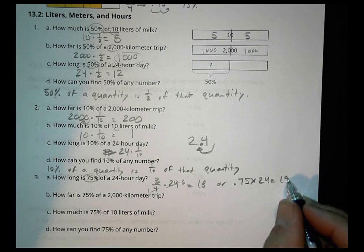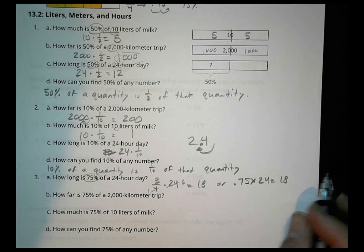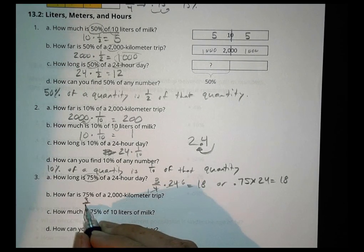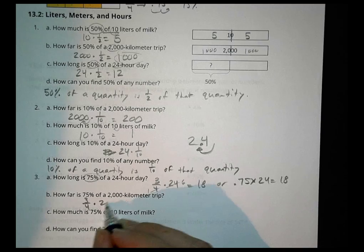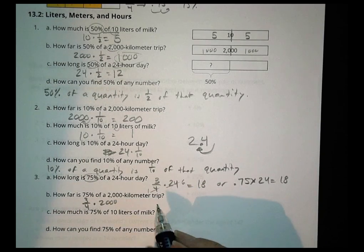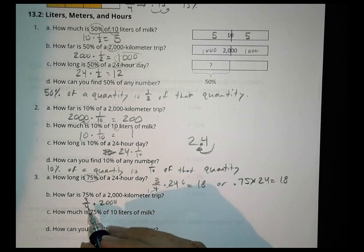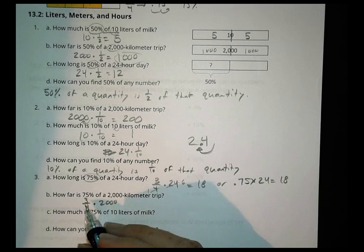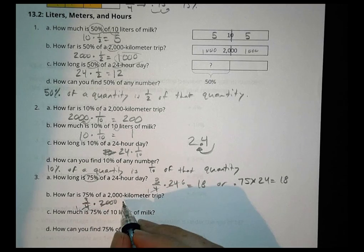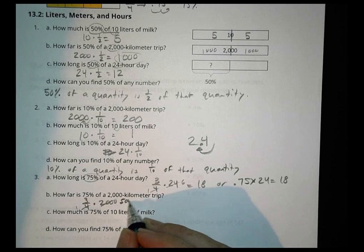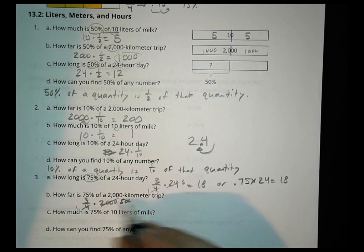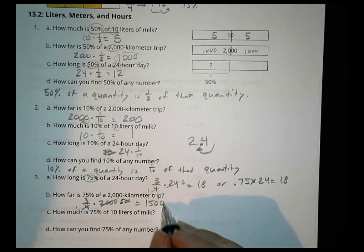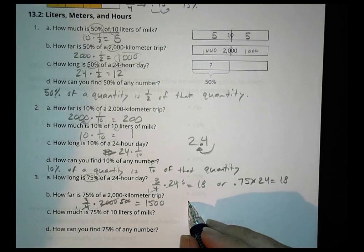So I can do some reducing, and 4 goes into 24 six times, and 3 times 6 is going to be 18. So 75% of 24 hours is 18. If I do 3 fourths of a 2,000 kilometer trip, 3 fourths times 2,000, 4 is going to go into 2,000 500 times, and 3 times 500 is going to be 1,500 kilometers.